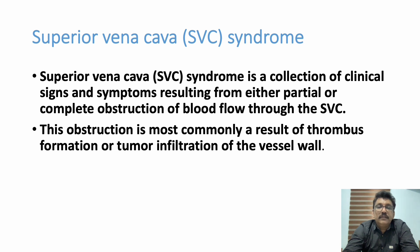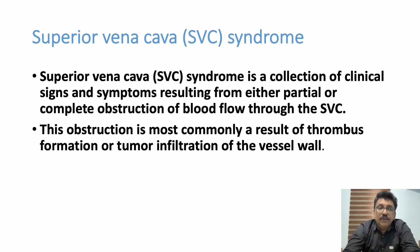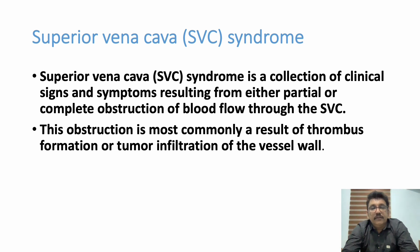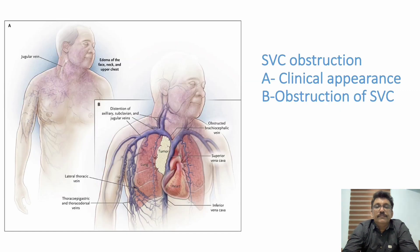All these things can obstruct the superior vena cava. The patient can have elevated jugular venous pressure, but pulsations may not be visible in that elevated JVP. Upper limb and facial swelling can also be present in patients with SVC syndrome.